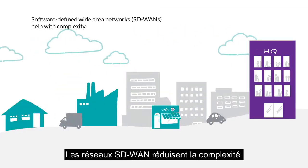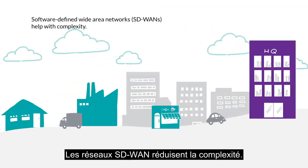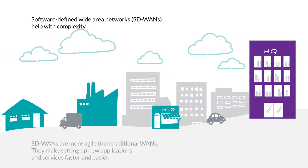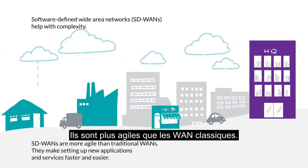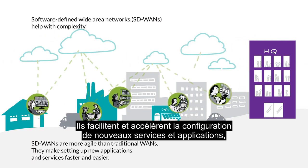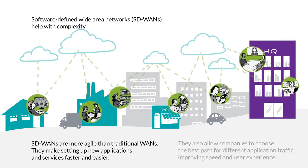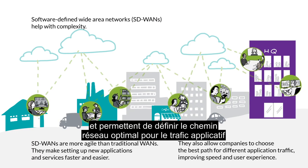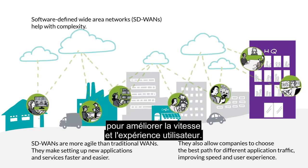Software-defined Wide Area Networks, or SD-WANs, help with complexity. SD-WANs are more agile than traditional WANs. They make setting up new applications and services faster and easier. They also allow companies to choose the best path for different application traffic, improving speed and user experience.